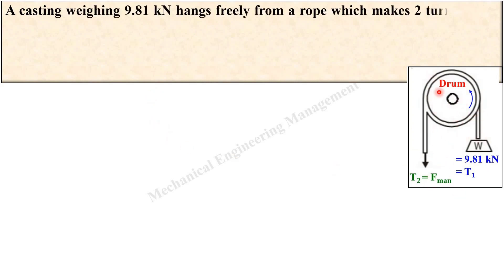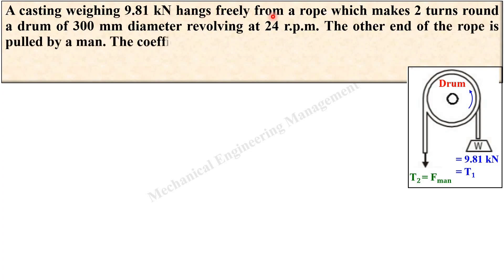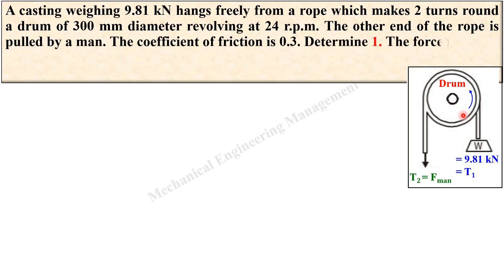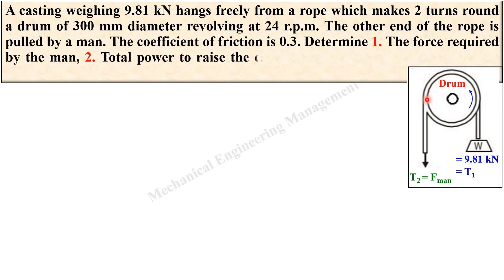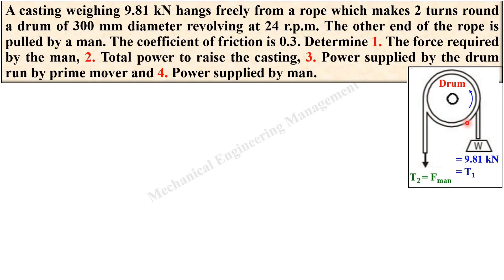This figure is actually not given in the examination, but here I have shown it to help understand the description. A casting weighing 9.81 kilo Newton hangs freely from a rope which makes two turns around a drum of 300 mm diameter revolving at 24 rpm. The other end of the rope is pulled by a man — that is the effort applied by the man. The coefficient of friction is 0.3, between the belt and the drum. Determine: the force required by the man, total power to raise the casting, power supplied by the drum run by a prime mover, and power supplied by the man.